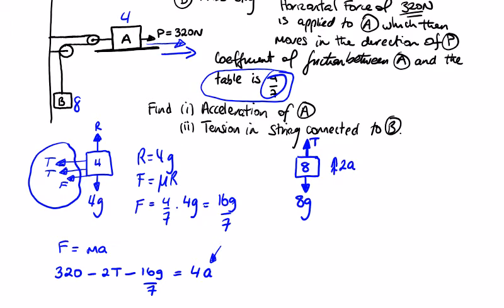So be careful with your acceleration. A is going to the right, so it's obviously going up with an acceleration of 2a. So T minus 8g is equal to m times a, which in this case is 2a. So T minus 8g is equal to 16a.